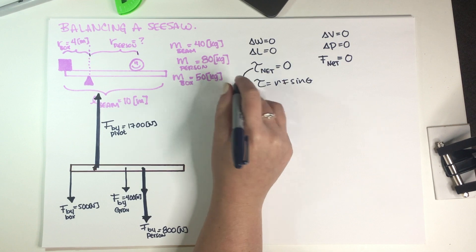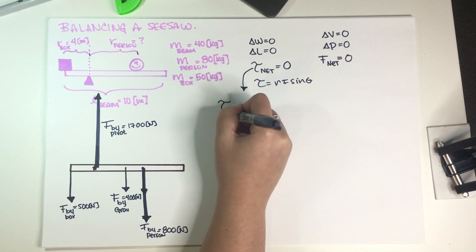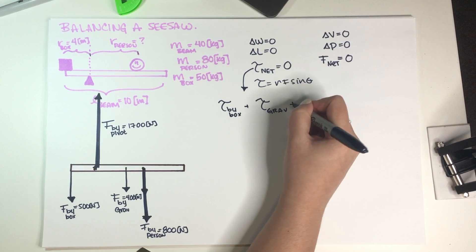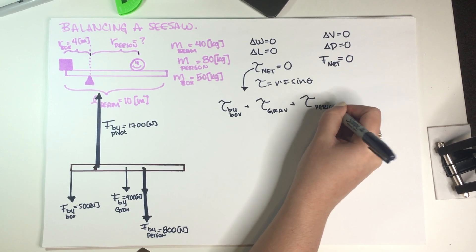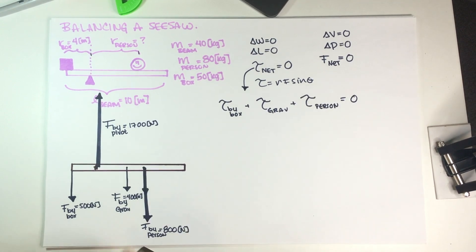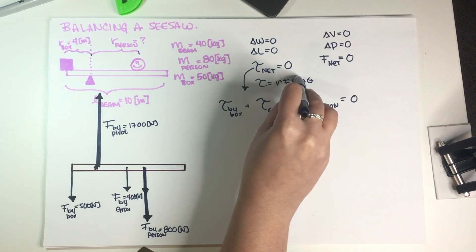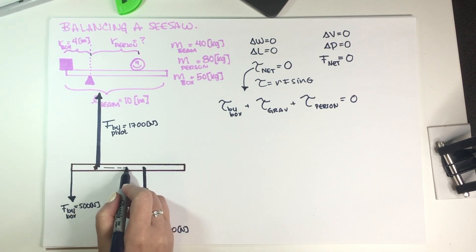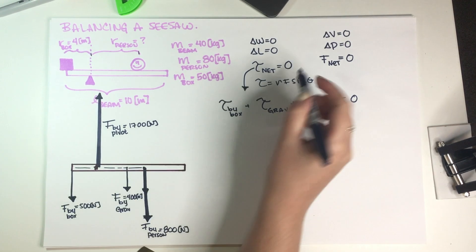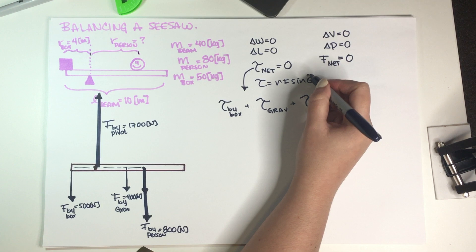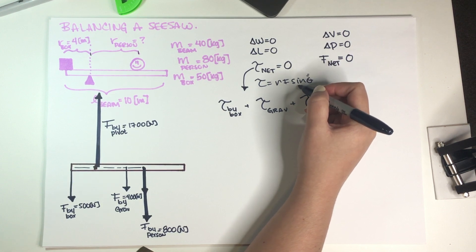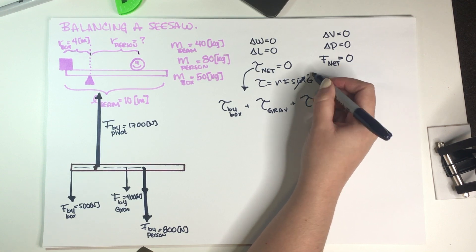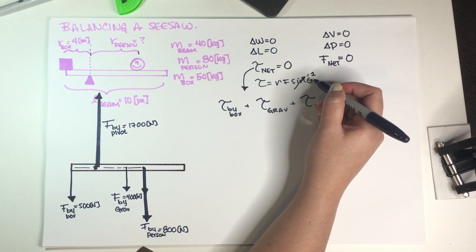Now let's write the torque equation: torque due to box plus torque due to gravity plus torque due to person equals zero. Notice all the r's and F's are exactly perpendicular to each other, so sine of 90° equals 1 for every force. I won't keep writing the sine term, but just know this is only valid because all forces are perpendicular to the beam.